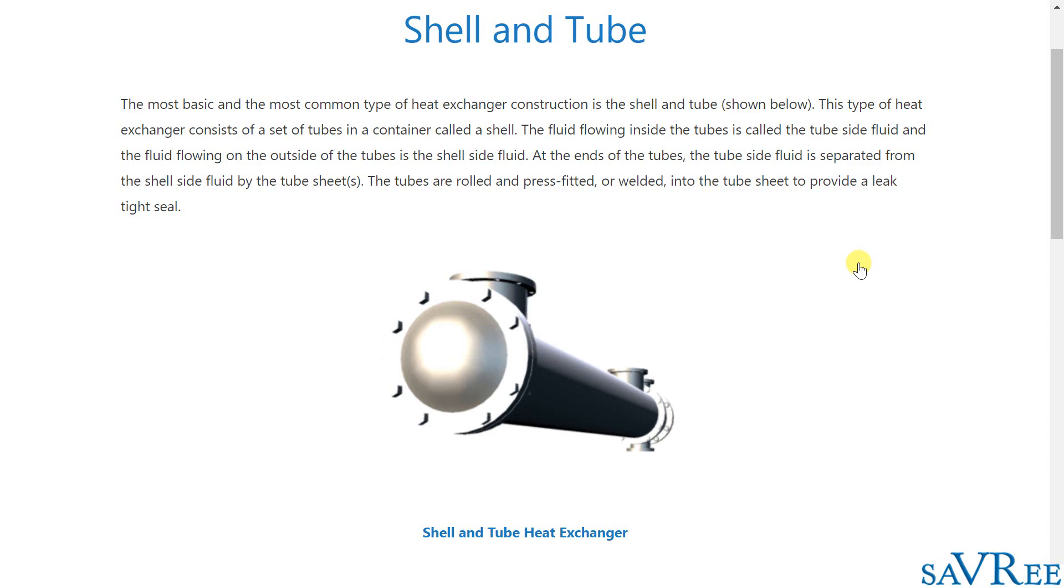The fluid flowing inside the tubes is called the tube side fluid and the fluid flowing on the outside of the tubes is the shell side fluid. At the end of the tubes, the tube side fluid is separated from the shell side fluid by the tube sheets. The tubes are rolled and press fitted or welded into the tube sheet to provide a leak tight seal.